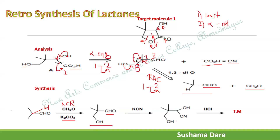After forming the beta-hydroxy carbonyl compound, cyanide attacks the carbonyl group in a cyanohydrin reaction, giving a cyano group. Then HCl hydrolyzes the cyano group to COH. The COH is then converted to COCl, which is a good leaving group. Finally, in the presence of acid, cyclization takes place and gives the target lactone.